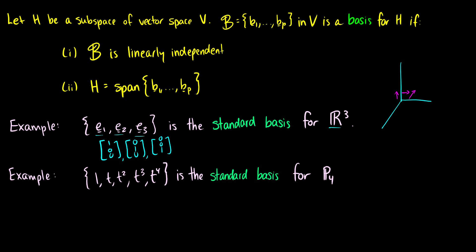For polynomials we also have a different standard basis, very similar to the standard basis for R3. The constant 1 corresponds to (1,0,0,0,0), t corresponds to (0,1,0,0,0), and so on. This basis is linearly independent and it spans all of p4.